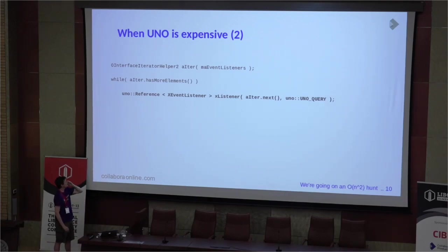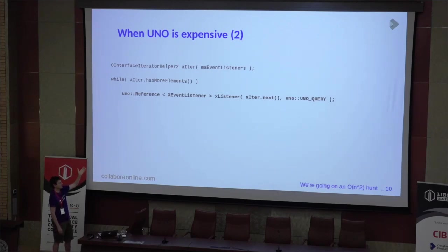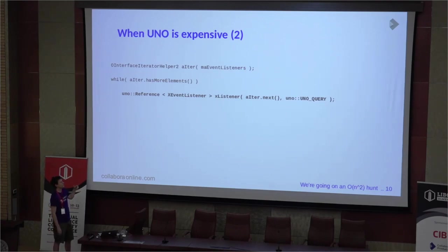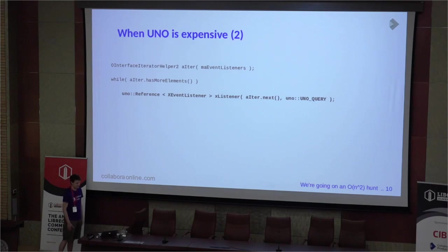The relatively straightforward change in this case was to switch that event listener. We already knew that that list contains only XEventListener, so we just needed a bit more type safety. We switched the array from containing XInterface to explicitly saying it contains XEventListener. We can skip the dynamic query, and it was about four or five times faster.